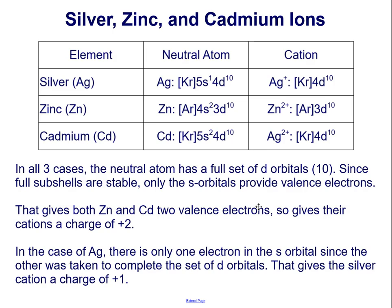Since full subshells are stable, only the s orbitals — the 5s1, 4s2, and 5s2 — provide valence electrons. That gives zinc and cadmium two valence electrons, 4s2 and 5s2, so gives their cations a charge of plus 2. In the case of silver, there is only one electron in the s orbital, since the other was taken to complete the full set of d orbitals. That gives the silver cation a charge of positive 1.